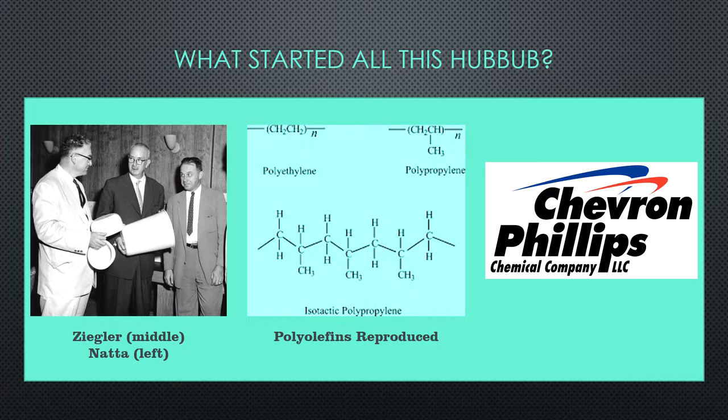In the early 20th century, however, these polyolefin materials were not readily available for industrial use. Carl Ziegler in the 1920s successfully polymerized butadiene, which sparked an interest in the scientific community. Could we polymerize propylene? What about ethylene?